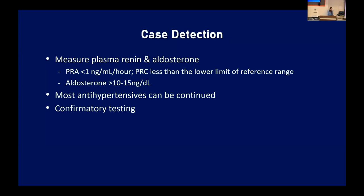For lab testing for case detection, you start with a plasma renin and an aldosterone level. You're looking for a very low renin — it doesn't matter whether you use plasma renin activity or plasma renin concentration, though most labs are moving toward the plasma renin concentration. You want an aldosterone of about 10 to 15. You can calculate a ratio; though cutoffs vary by guideline, a 20 to 30 ratio is pretty significant. Research is finding that even lower aldosterone levels may be suspicious, possibly a total aldosterone of eight becoming concerning.